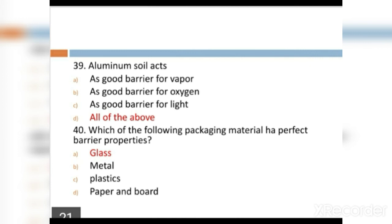MCQ 40: Which of the following packaging material has perfect barrier properties? Option A: glass. Option B: metal. Option C: plastic. Option D: paper and board. Option A, glass, is the right answer.